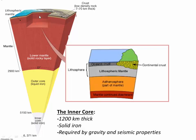Earth is almost 6,400 kilometers in radius — it's a big rock floating in space. We can divide it into three, four, or five divisions. The lowest division is called the inner core: 1,200 kilometers thick, made mostly of solid iron. We've certainly never been there and don't have a sample of it. We know the inner core exists because it's required by modeling of gravity on the surface of the Earth, and also by the behavior of seismic waves as they pass through the interior of Earth.